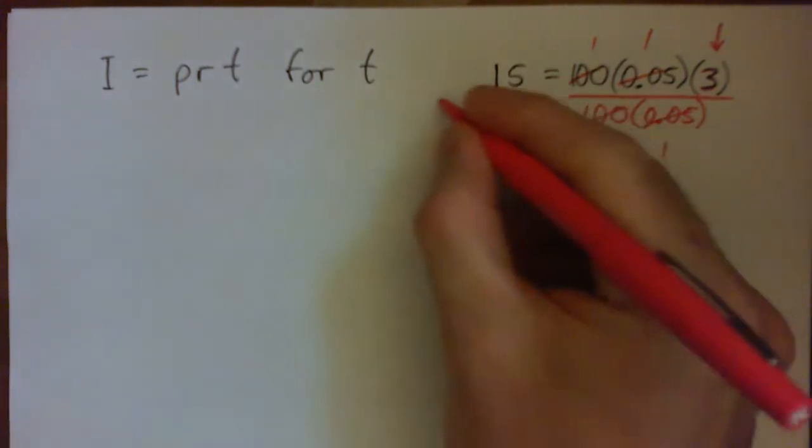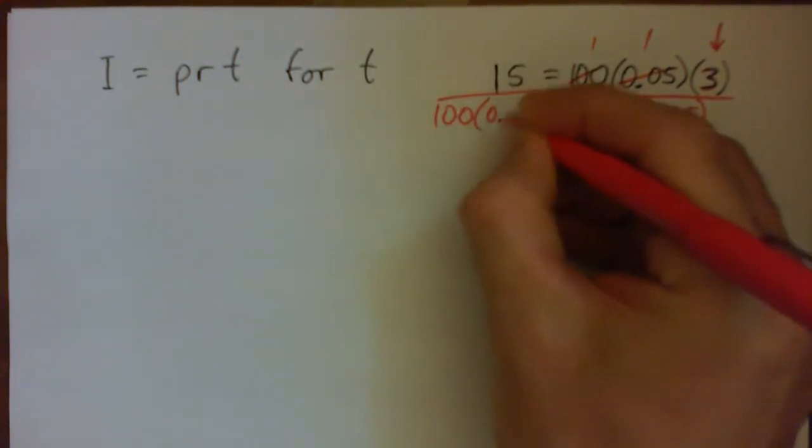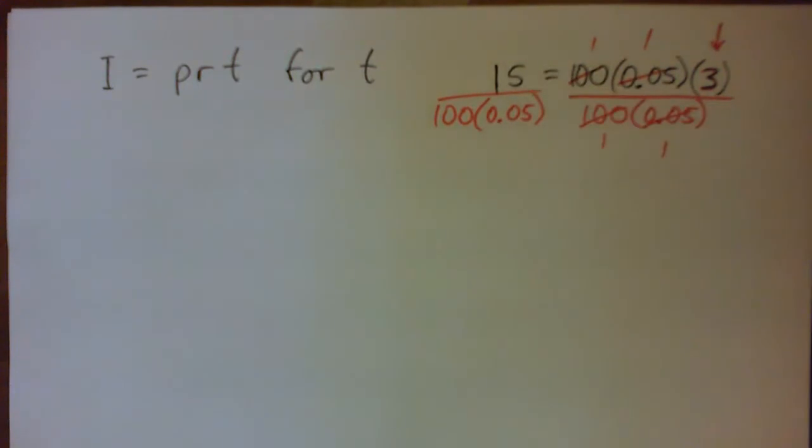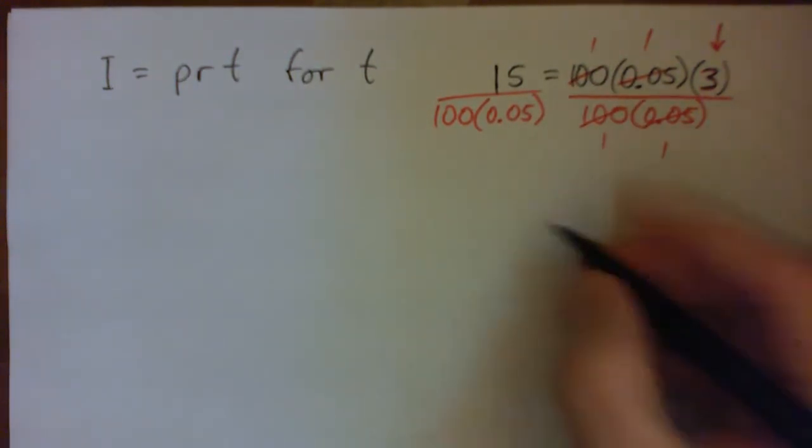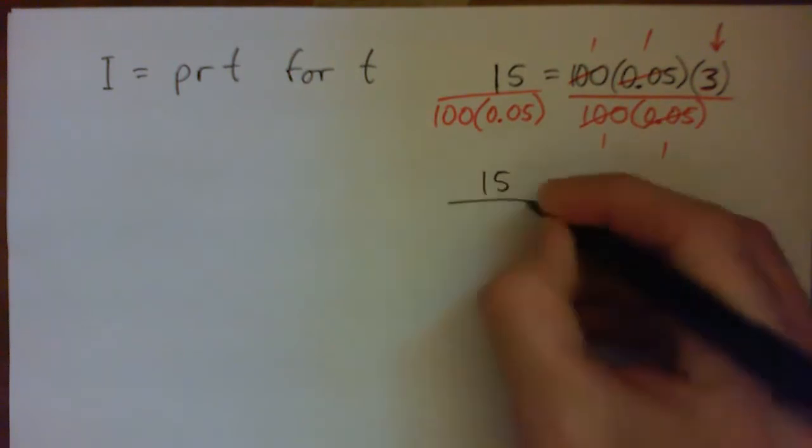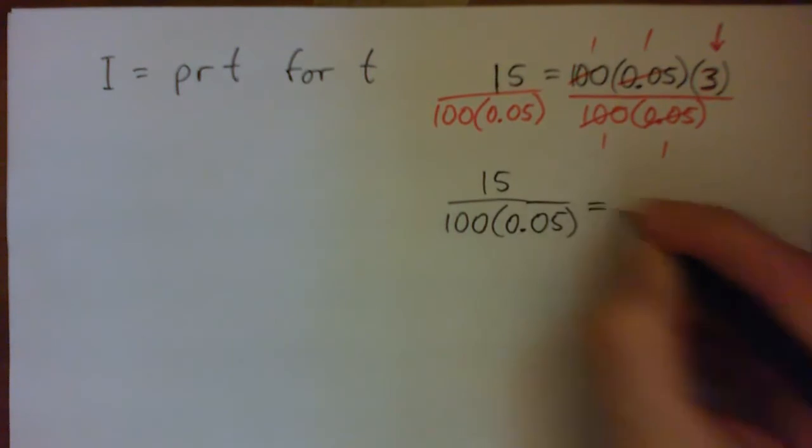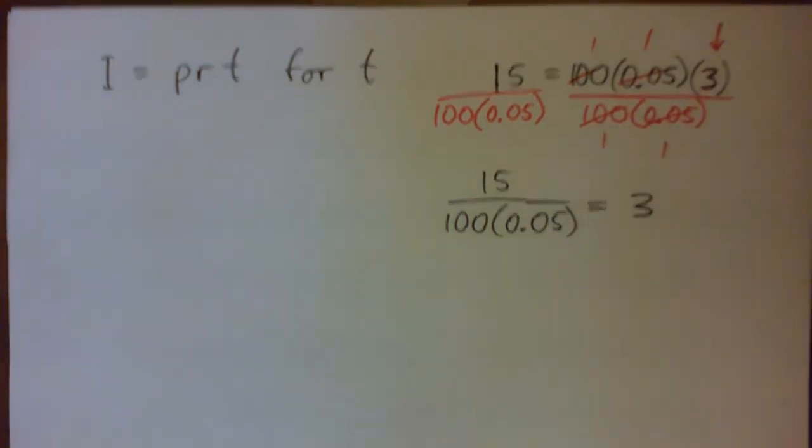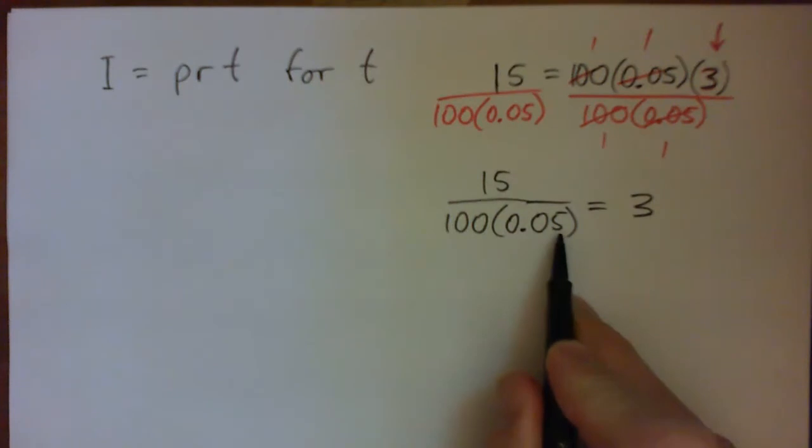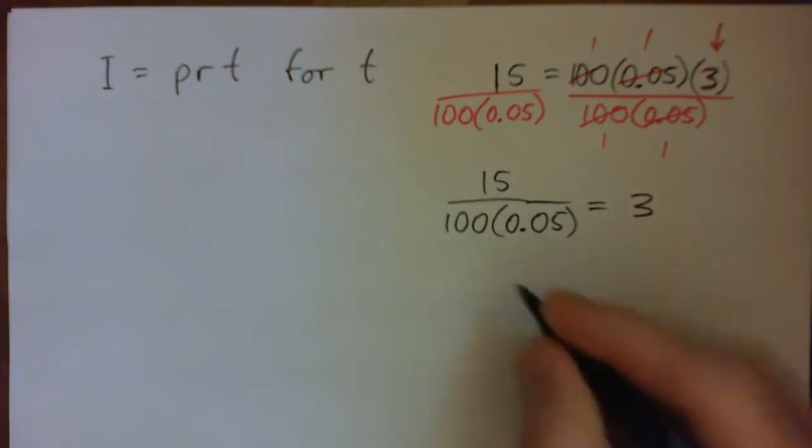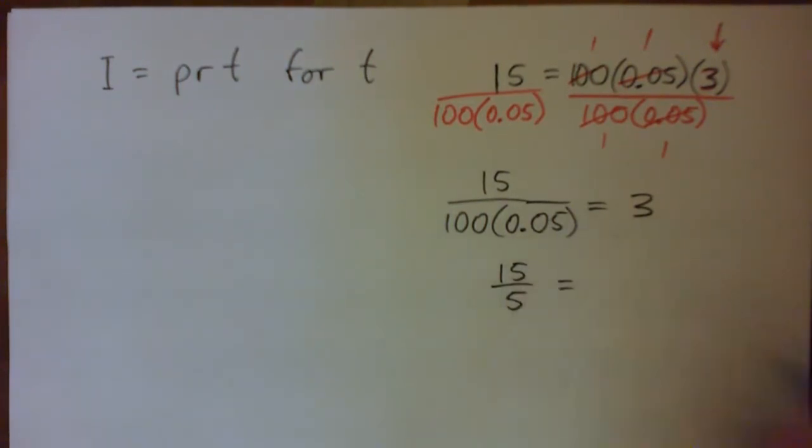So, and I can do the same on the other side. Divide by 100 times 0.05. And so we end up with basically 15 over 100 times 0.05 is equal to, and we just have three there. So that's how you would solve something like this with numbers. And by the way, 100 times 0.05, that is 5% of 100 is just 5. So this is actually 15 over 5. And 15 over 5 is definitely 3.